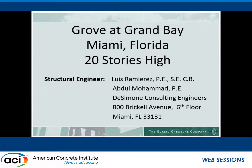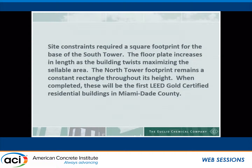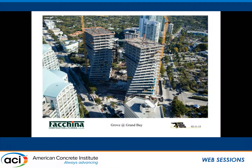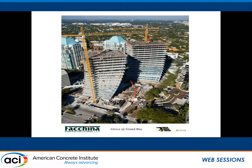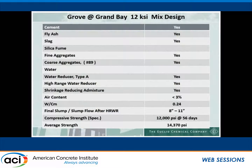The Grove at Grand Bay in Miami, Florida is a 20-story project featuring two towers that twist to give both sides of the building a view of the bay. It will be the first LEED Gold Certified Residential Building in Miami when completed. The detailed mix design was not shared, but it includes slag and silica fume, a water-to-cement ratio of 0.24, and a compressive strength requirement of 12,000 PSI.